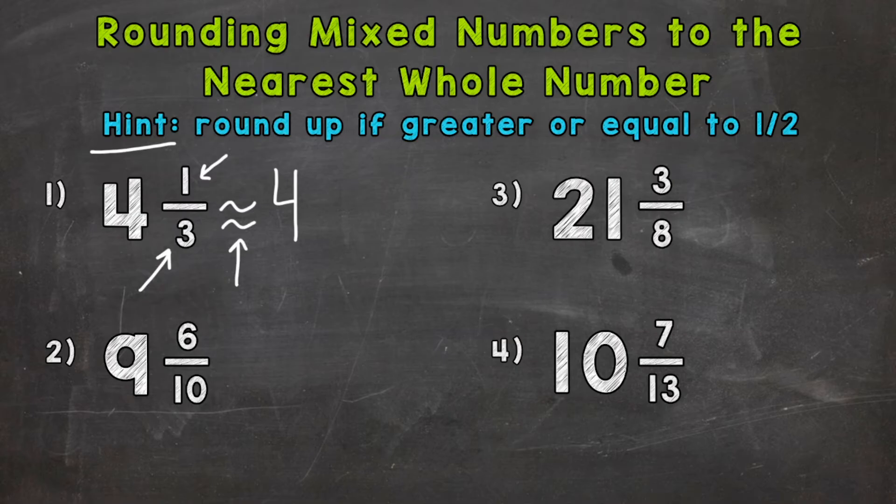So on to number two, where we have nine and six tenths. So let's take a look at the fractional part. And we need to determine if that's greater or equal to a half or less than half. So our numerator is six. So we need to think, well, what's half of ten? Five tenths is half. So we have six tenths. So that's greater than a half. And that tells us that we would round to ten. So nine and six tenths is closer to ten or would round to ten rather than closer to nine.